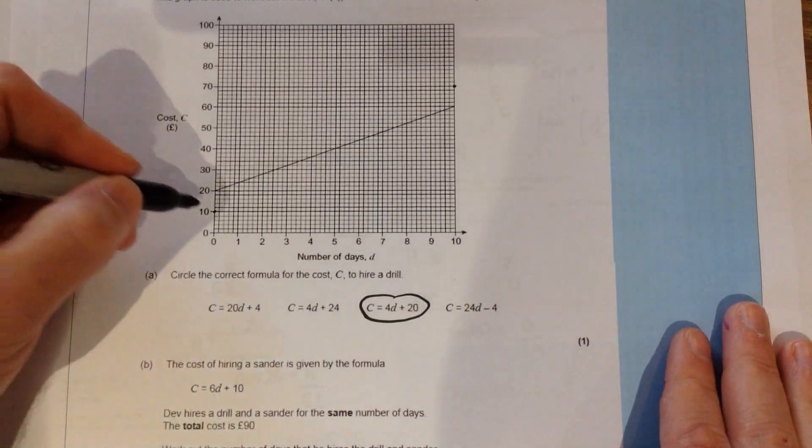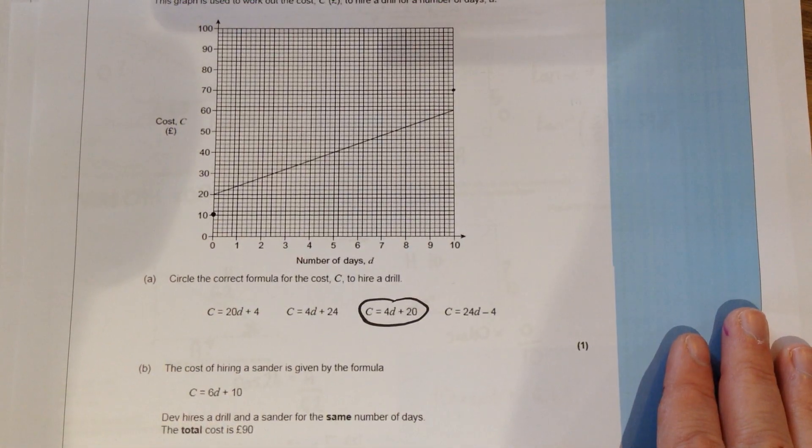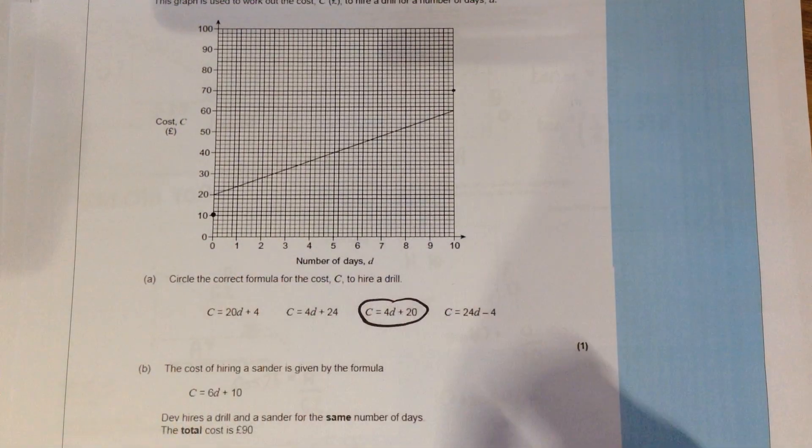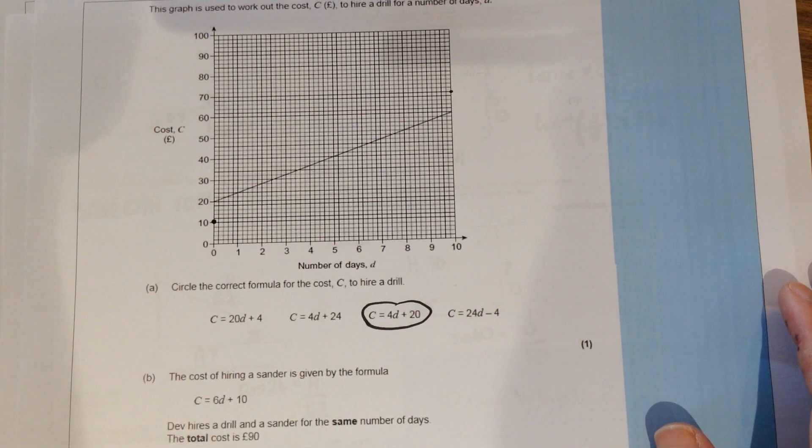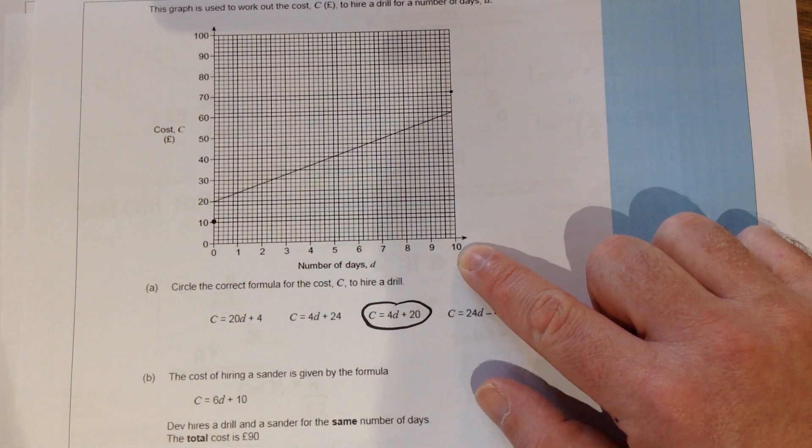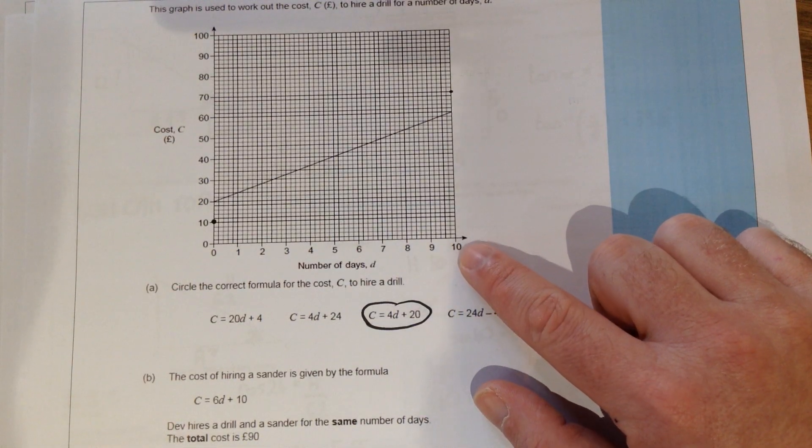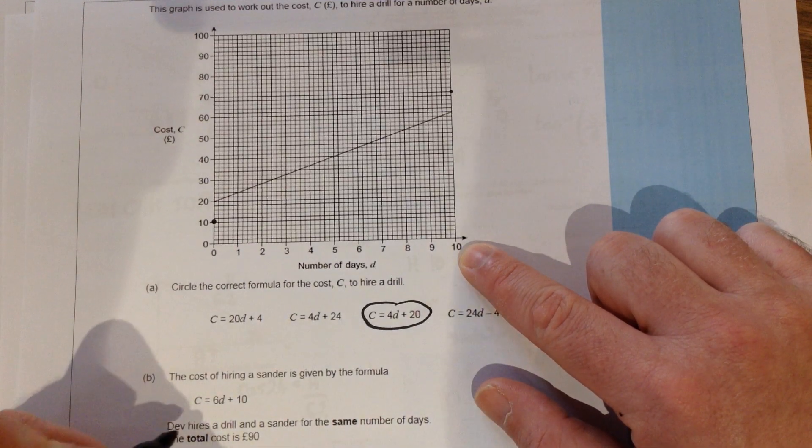So if I was to draw this on the graph, I put a little point at 10 and then I want another point on that graph just so I can plot some points and actually join up the line. Easiest one to do is let's use quite a large number. So let's go for the biggest number on the graph, 10.